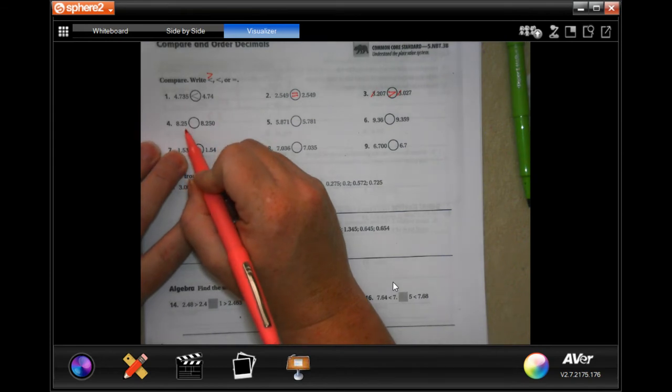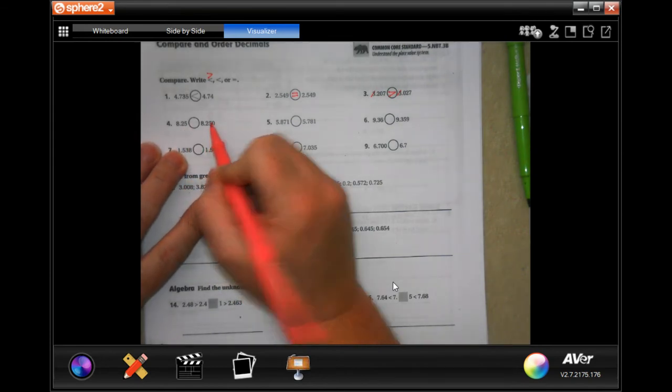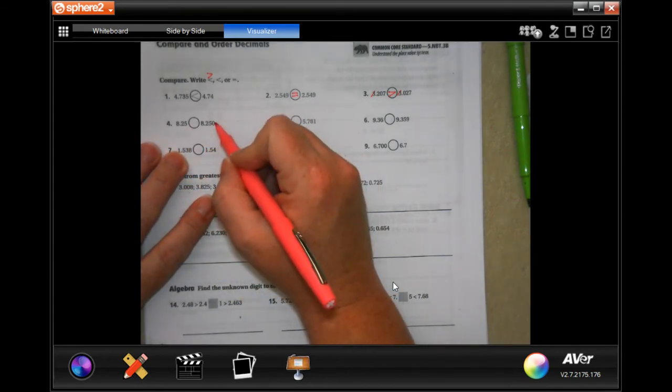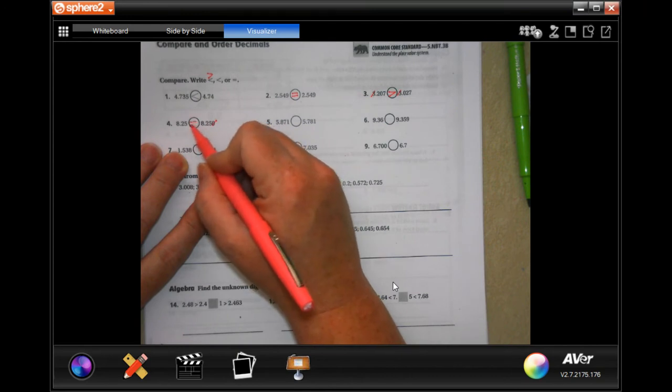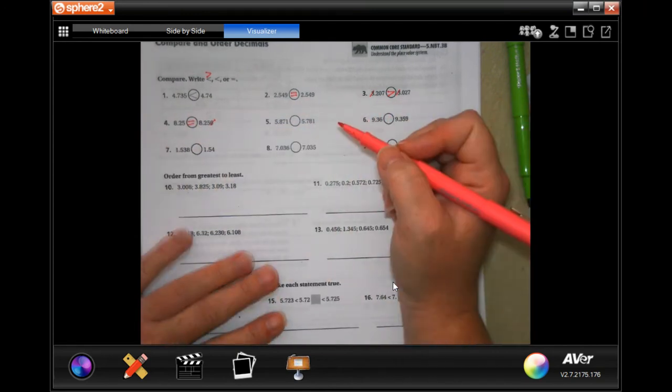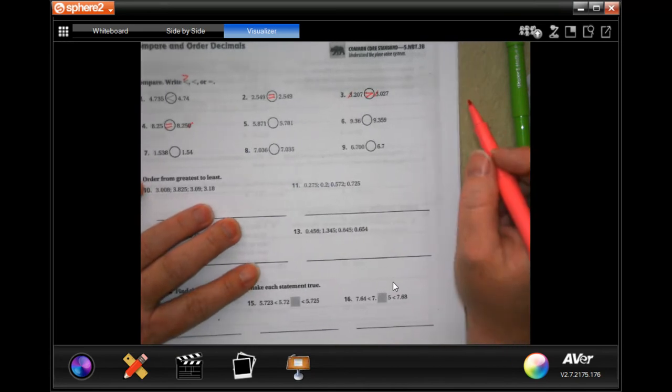Now number four, they're trying to trick you. A zero at the very end of a number that's got a decimal point, you can just cross that off. Which means that 8.25 and 8.25 are equal. They're just trying to trick you.